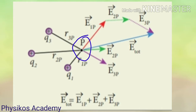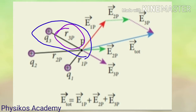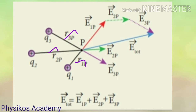We need to find the electric field at point P. The distance between charge Q1 and point P is R1P. The distance between charge Q2 and point P is R2P. And the distance between point charge Q3 and point P is R3P.